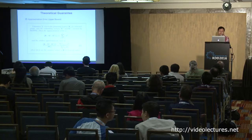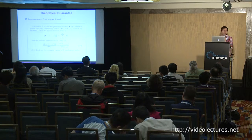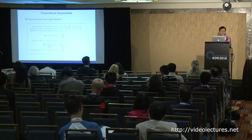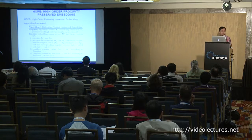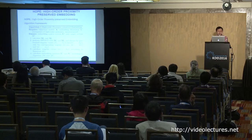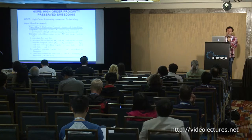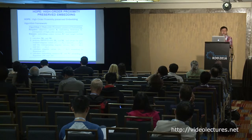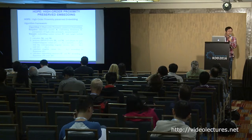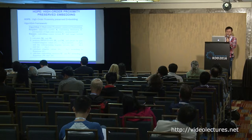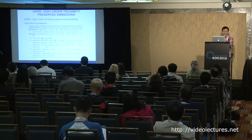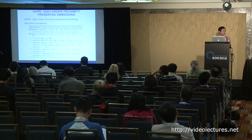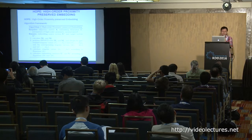Since this is a well-established math problem, we can derive an upper bound for the approximation error, so accuracy is guaranteed. Putting everything together, we call our algorithm HOPE — High Order Proximity preserved Embedding. The algorithm takes as input an adjacency matrix, an embedding dimension, and which high-order proximity to use; then uses the general form and generalized SVD to calculate the embedding vectors, thereby preserving asymmetric transitivity in the graph embedding framework.